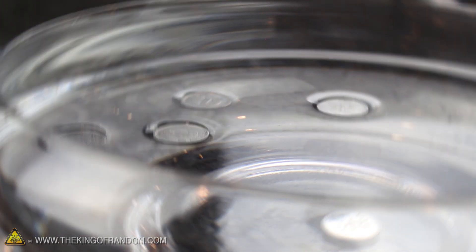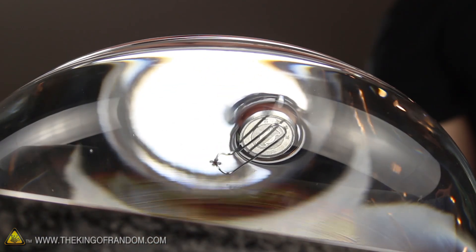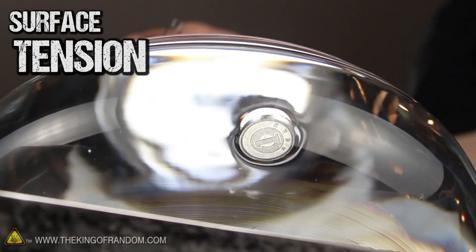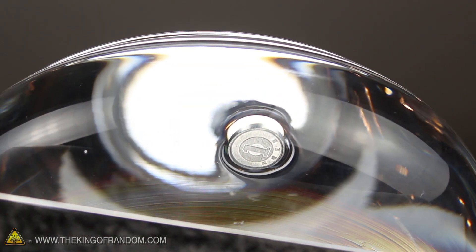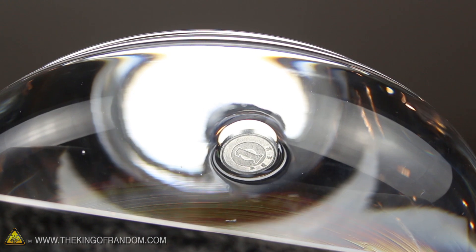But how does this work? The answer is surface tension. The attraction between the water molecules at the surface is just strong enough to support the weight of an aluminum coin without letting it break through. It's kinda like a thin elastic layer that covers the top, and it's a very delicate balance.